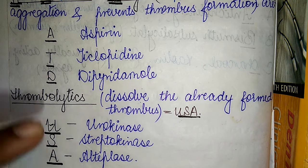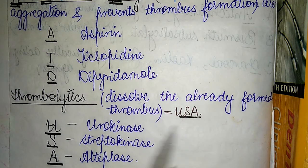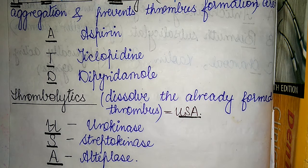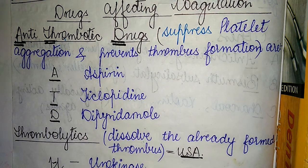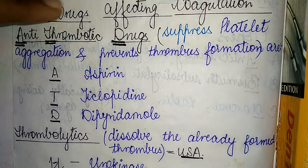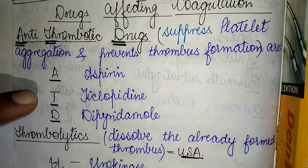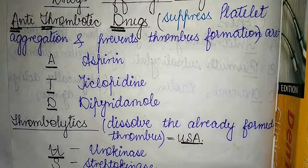To summarize, thrombolytic drugs can be better remembered using the mnemonic USA, and antithrombotic drugs can be remembered using the initials A, T, and D, where each initial corresponds to one drug.